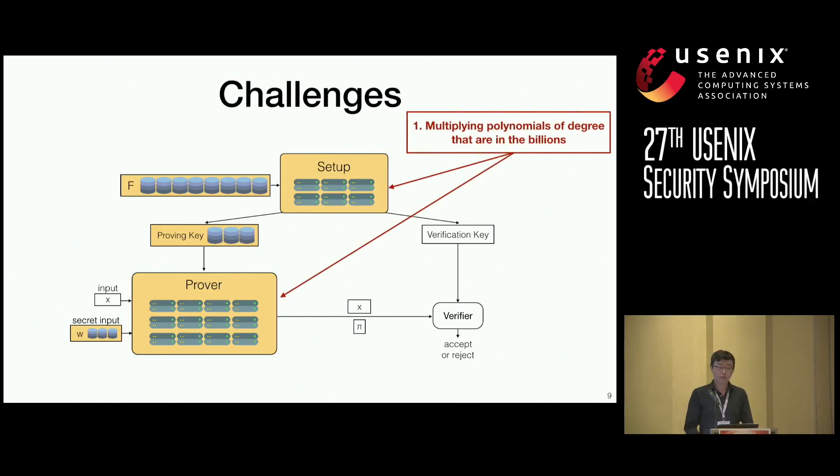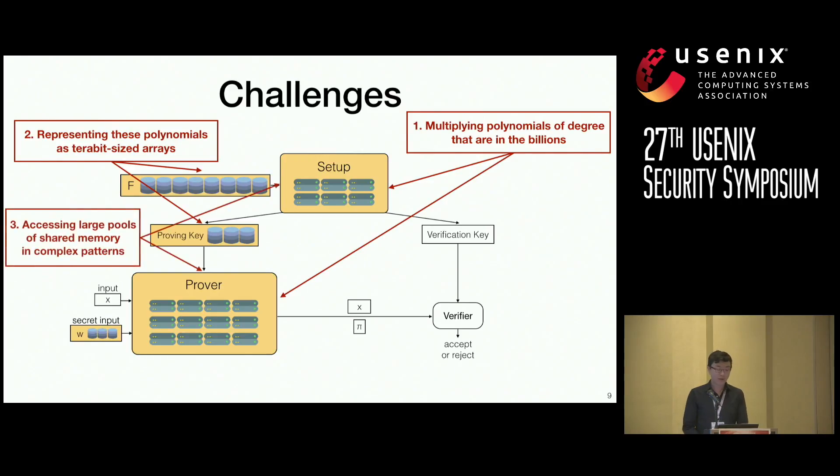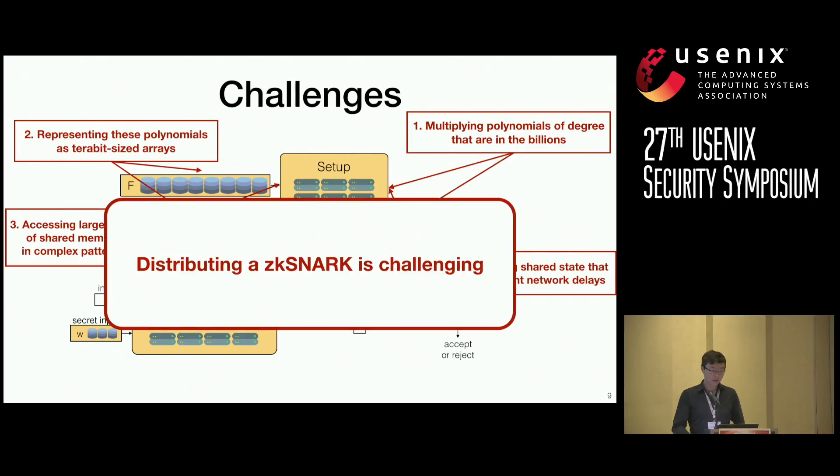There are several challenges that arise with this current setup. First, we're multiplying polynomials of degree that are now in the billions. Two, we're representing these polynomials as terabit-sized arrays. Third, we're accessing large pools of shared memory in complex access patterns. And fourth, we're synchronizing shared state that incurs significant network delays. These are fundamental challenges that we need to overcome, and so we do so in the following way.